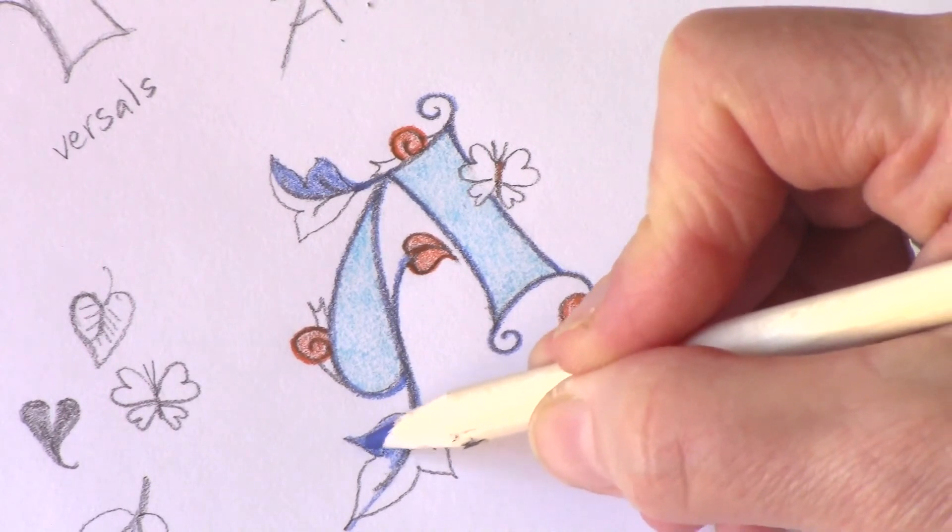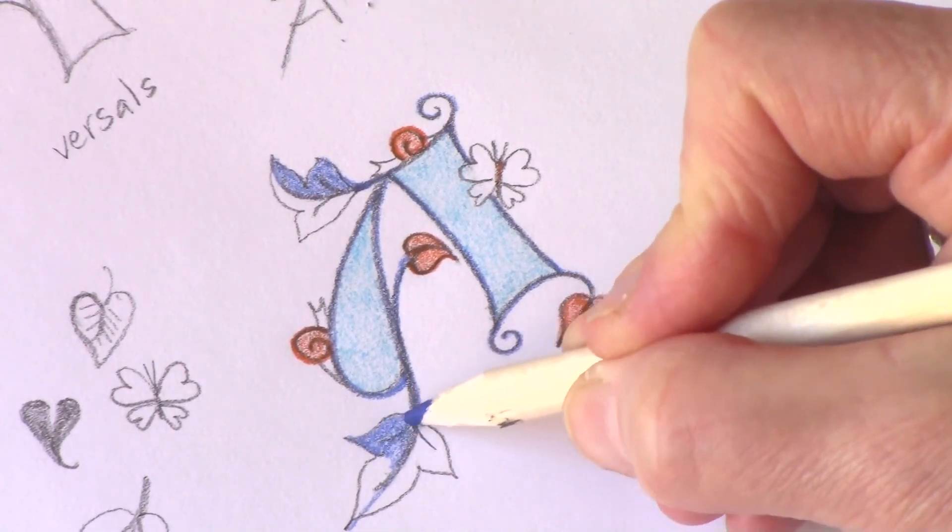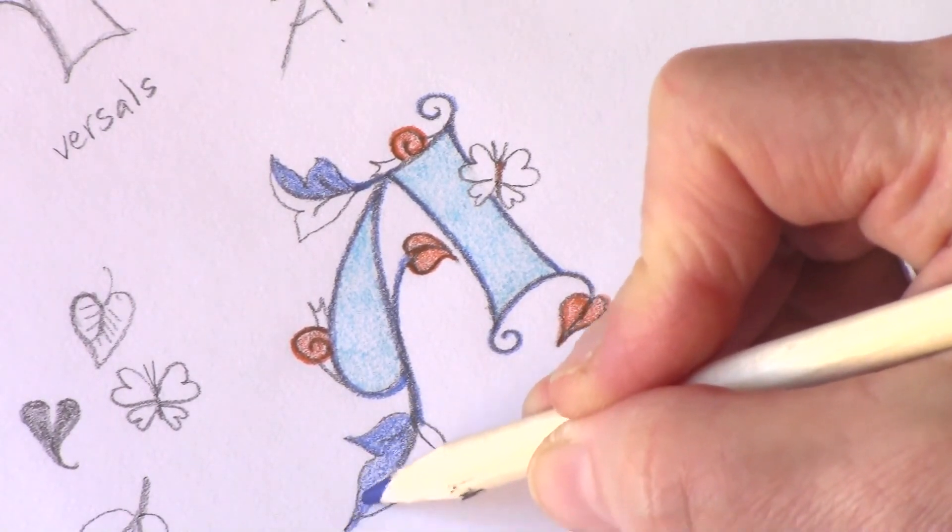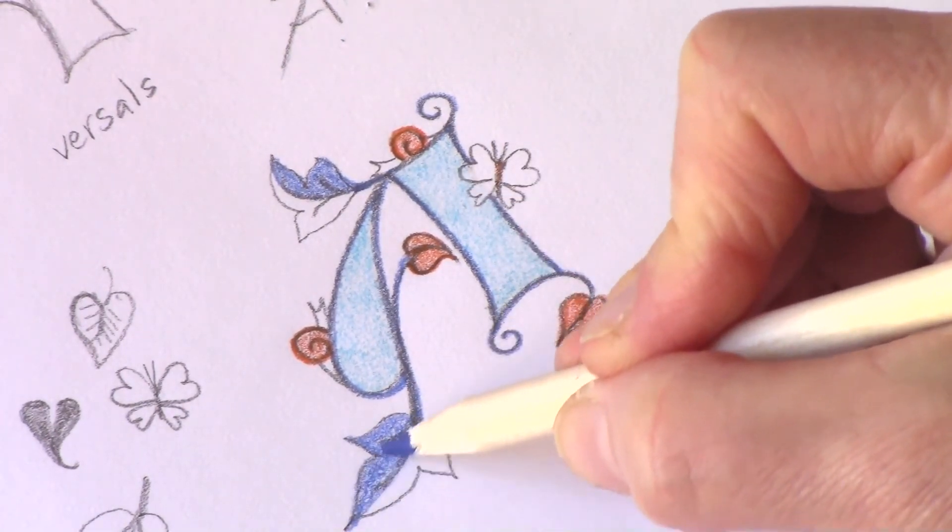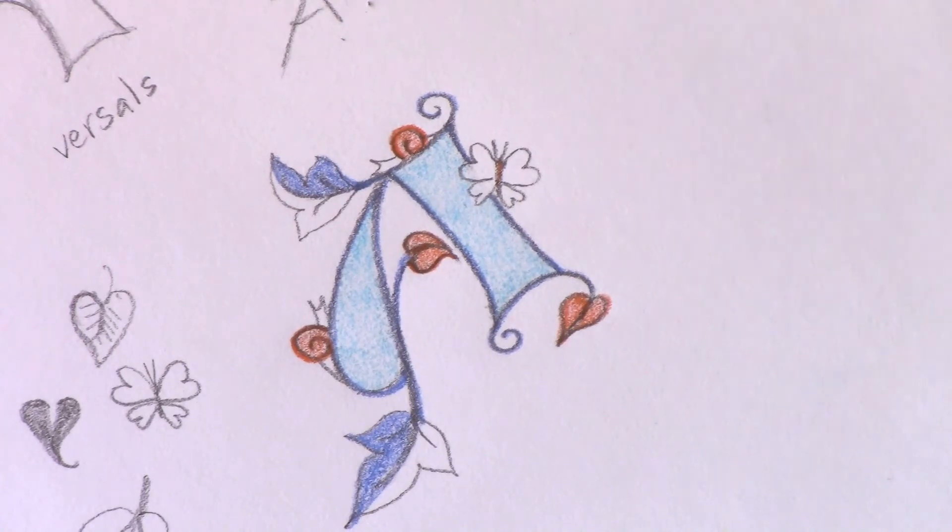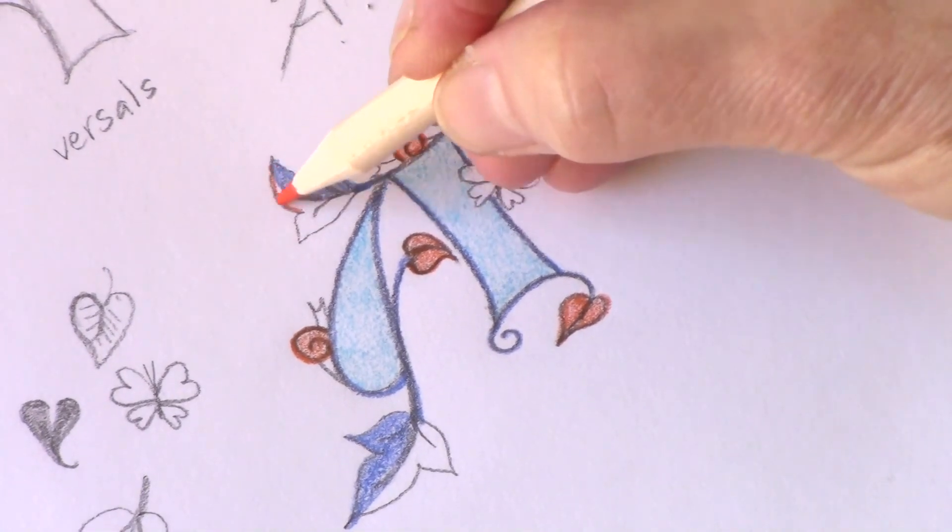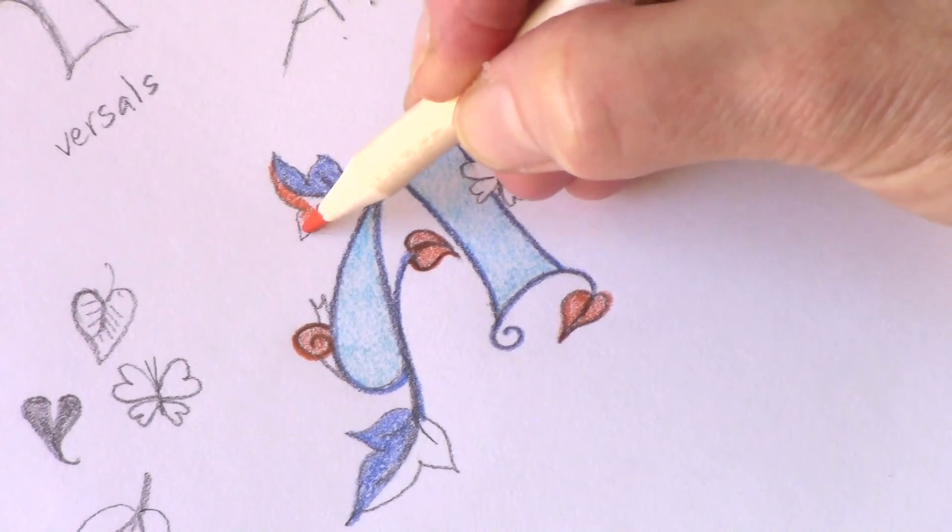Now in heraldic art, you know the art of coats of arms and shields and heraldry, they often with their leaves or drapery have two different colors in the same design. So let's do that. Let's have one side of the leaf blue and one side orange. Just like in heraldic art. Just an idea. In fact, of course you can use other colors as well. But I like not to put too many colors into a small design.